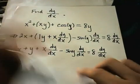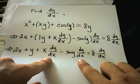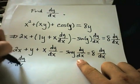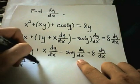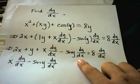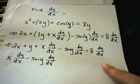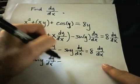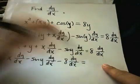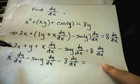So, I'm going to keep the terms that have a dy dx on the left side. So, I'll have x dy dx minus sine y dy dx. I'm going to move the 8 dy dx over by subtracting it. So, minus 8 dy dx.